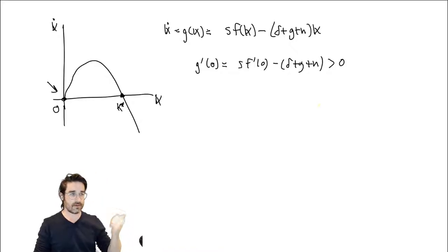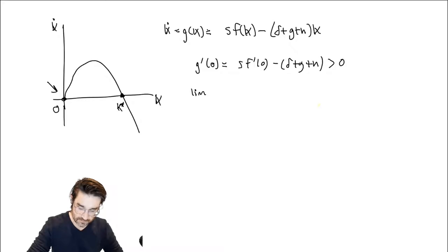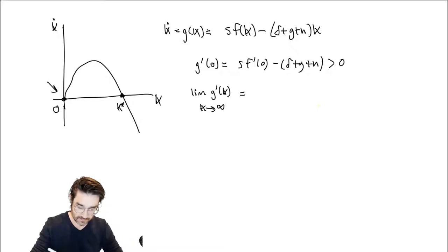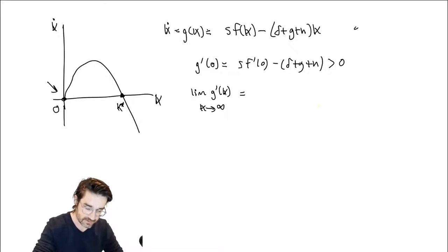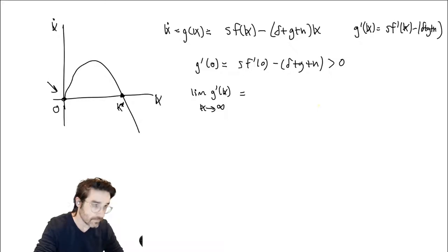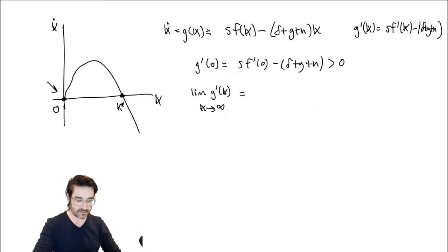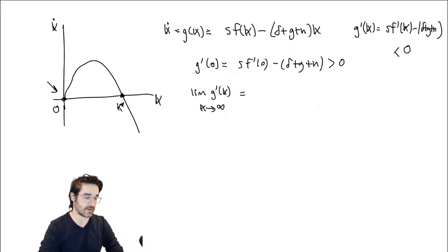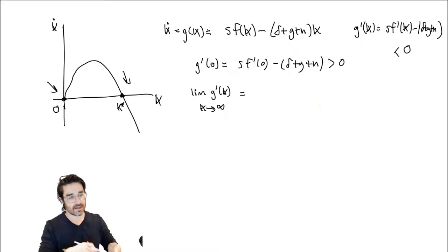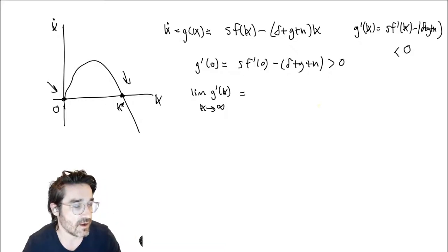The other side is when K goes to infinity. The limit of G prime of K as K goes to infinity is going to be S times F prime of K minus (Delta + G + N). The second part of the Inada condition is F prime goes to zero as K goes to infinity, in which case G prime would be negative in the limit. If it has a strictly negative limiting slope, it must eventually cross below the axis — meaning a unique crossing point and hence global stability.